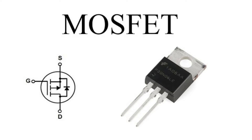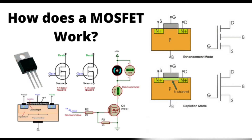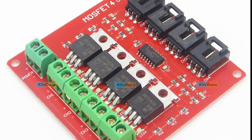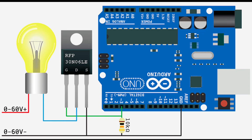MOSFET structure: the MOSFET is a three-terminal device with gate (G), drain (D), and source (S) terminals. MOSFETs are commonly used in automotive electronics, particularly as switching devices in electronic control units and as power converters in modern electric vehicles.